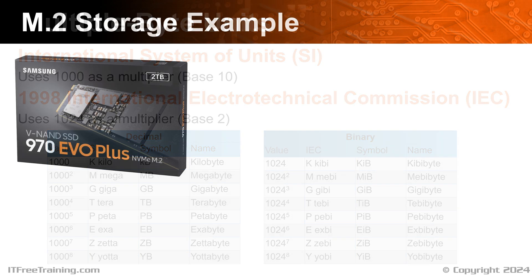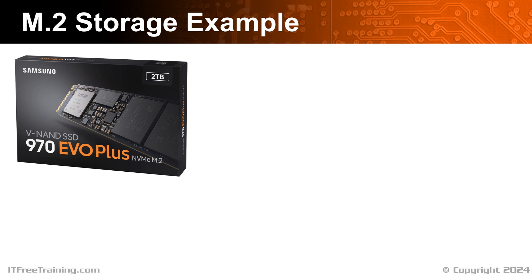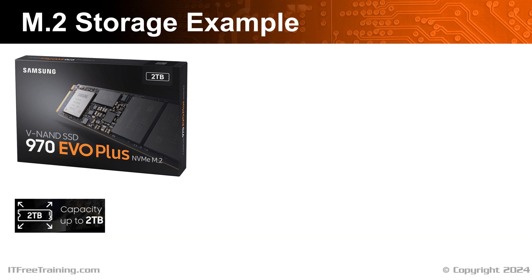Let's have a closer look. For this example, I will look at a 2TB M.2 drive. To understand how much space I can expect to get, I will have a closer look at the specifications on the manufacturer's website. The space on the website is given as up to 2TB, so the storage to be expected will be up to 2TB and no more, although it could also be less than 2TB. The reason it could be lower is if some of the space fails testing - you may not get the full 2TB, but it should be pretty close.